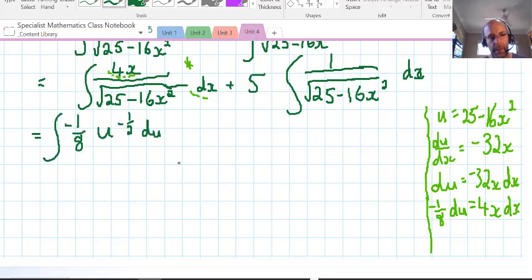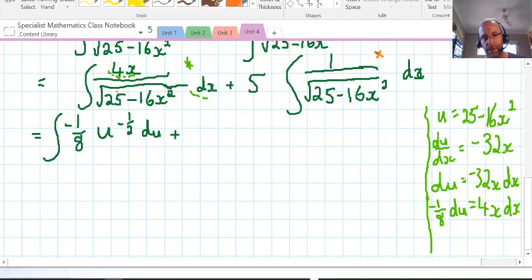So now we can go back in and sub that. We get negative 1/8 times u to the negative 1/2 du. And now for the second part here, we don't have the same scenario.